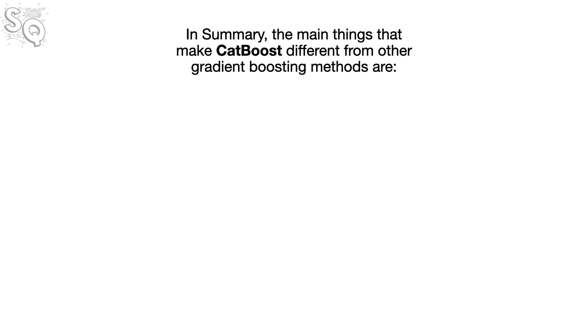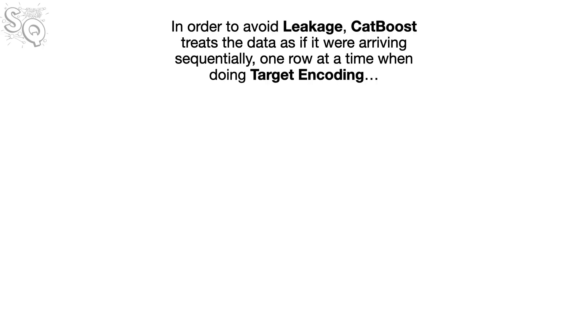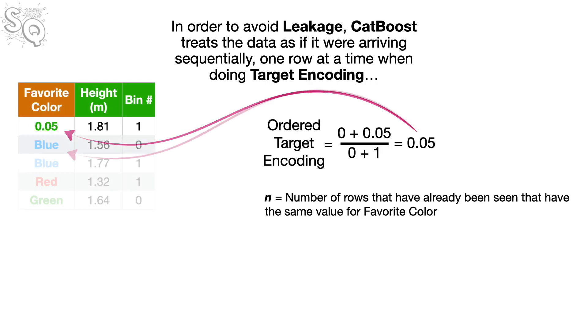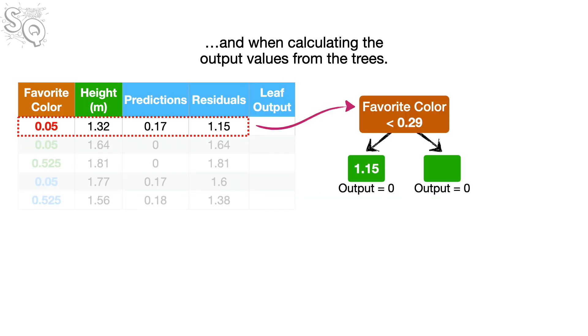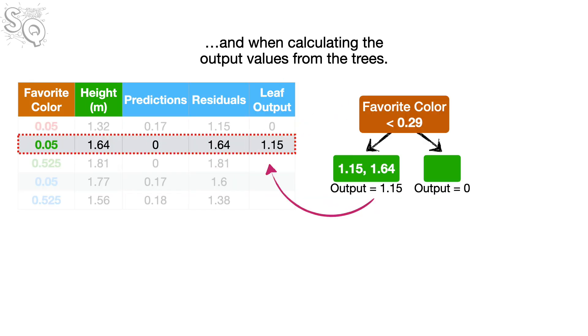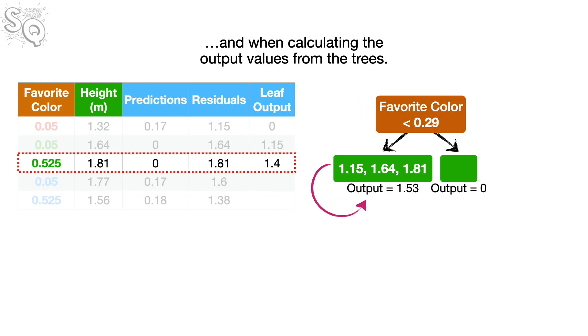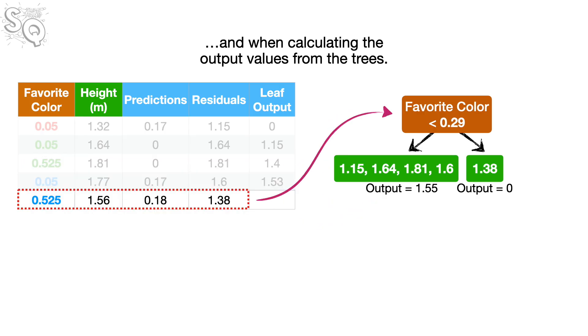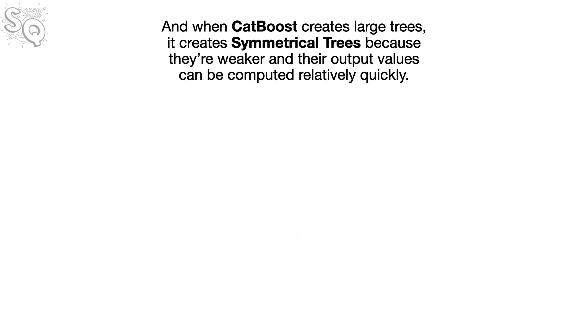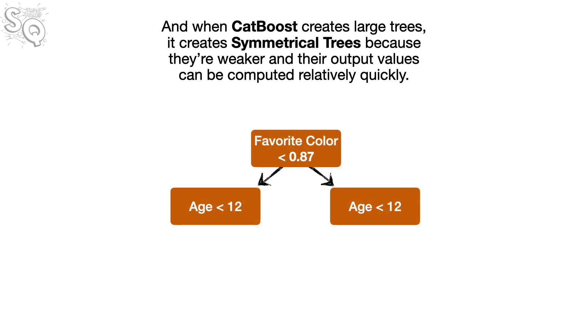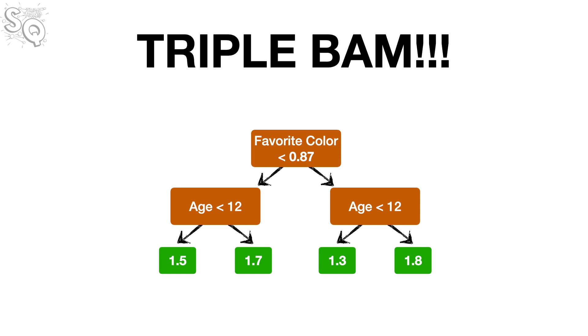In summary, the main things that make CatBoost different from other gradient boosting methods are... In order to avoid leakage, CatBoost treats the data as if it were arriving sequentially, one row at a time when doing target encoding and when calculating the output values from the trees. And when CatBoost creates large trees, it creates symmetrical trees because they're weaker and their output values can be computed relatively quickly. Triple bam.